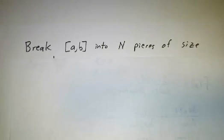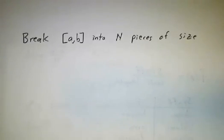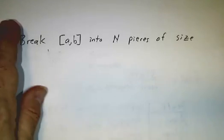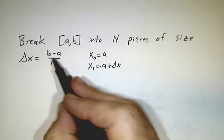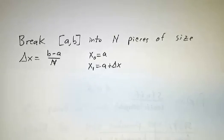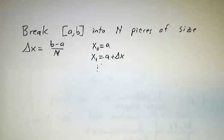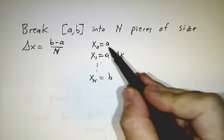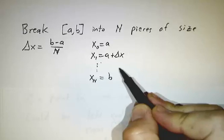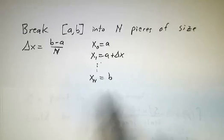So we break our interval from a to b into n pieces. And how big are the n pieces? Well, the total length is b minus a. So the length of each piece is b minus a over n. We call that delta x. And then we label a bunch of points. Our starting point is a, a plus delta x, a plus 2 delta x, a plus 3 delta x, xn is a plus n delta x, which is b.